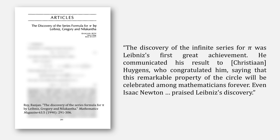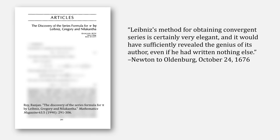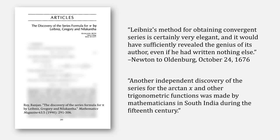Roy writes, The discovery of the infinite series for Pi was Leibniz's first great achievement. He communicated his result to Haukens, who congratulated him, saying that this remarkable property of the circle will be celebrated among mathematicians forever. Even Isaac Newton praised Leibniz's discovery. In a letter, Newton wrote, Leibniz's method for obtaining convergent series is certainly very elegant, and it would have sufficiently revealed the genius of its author, even if he had written nothing else. Oh, what a difference a few years will make. Roy also describes how Nelikanta and Madhava also figured out this arctangent series.